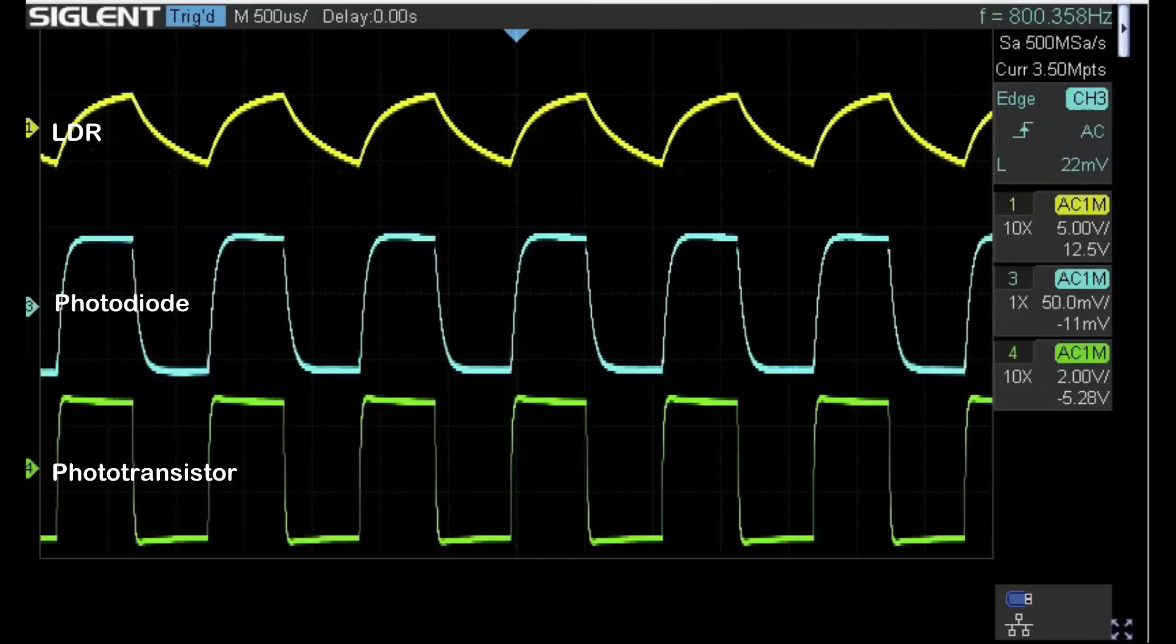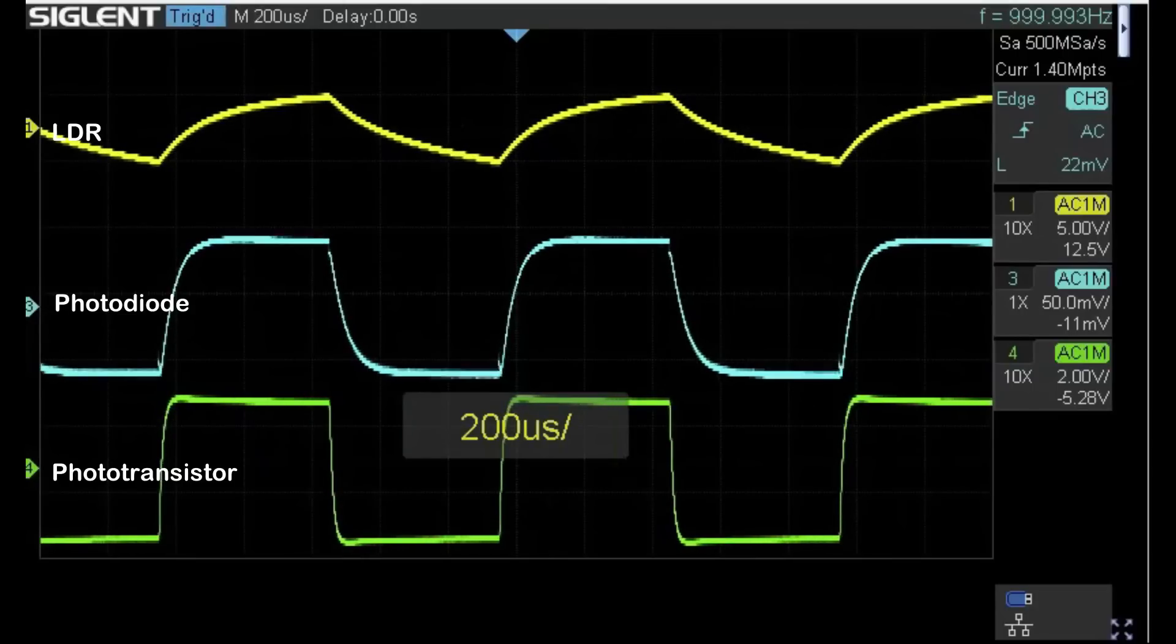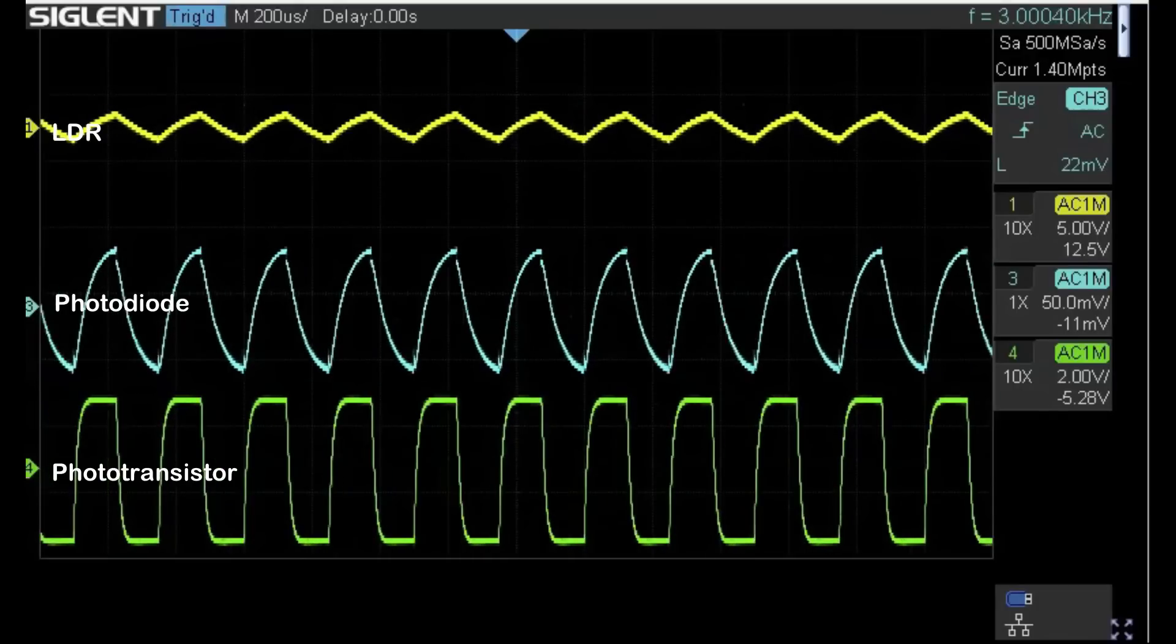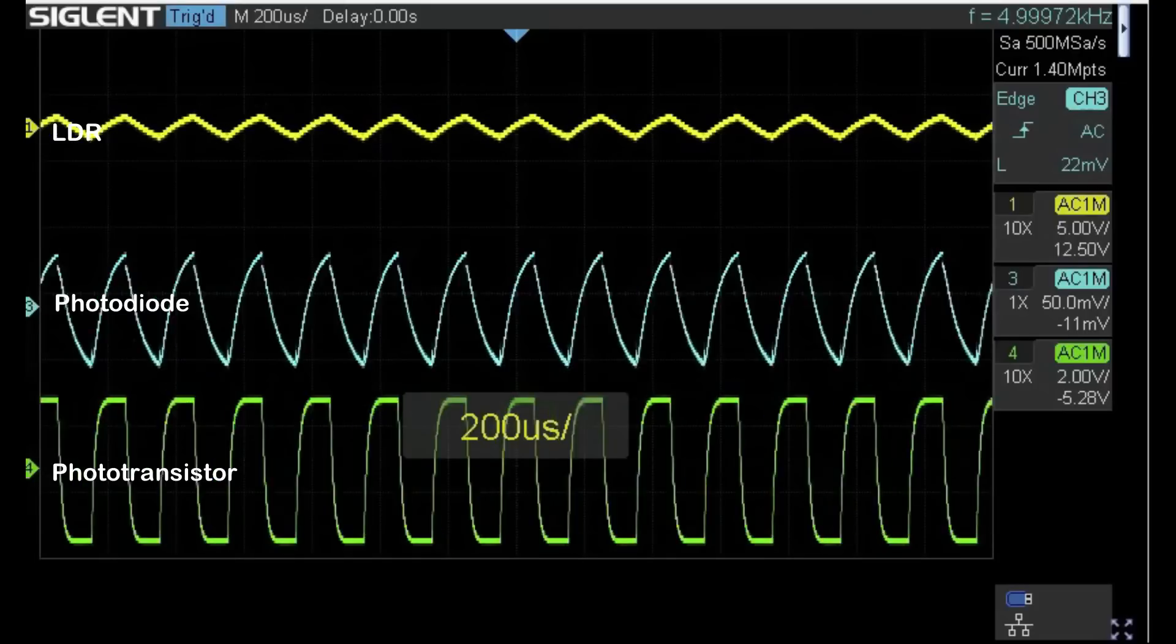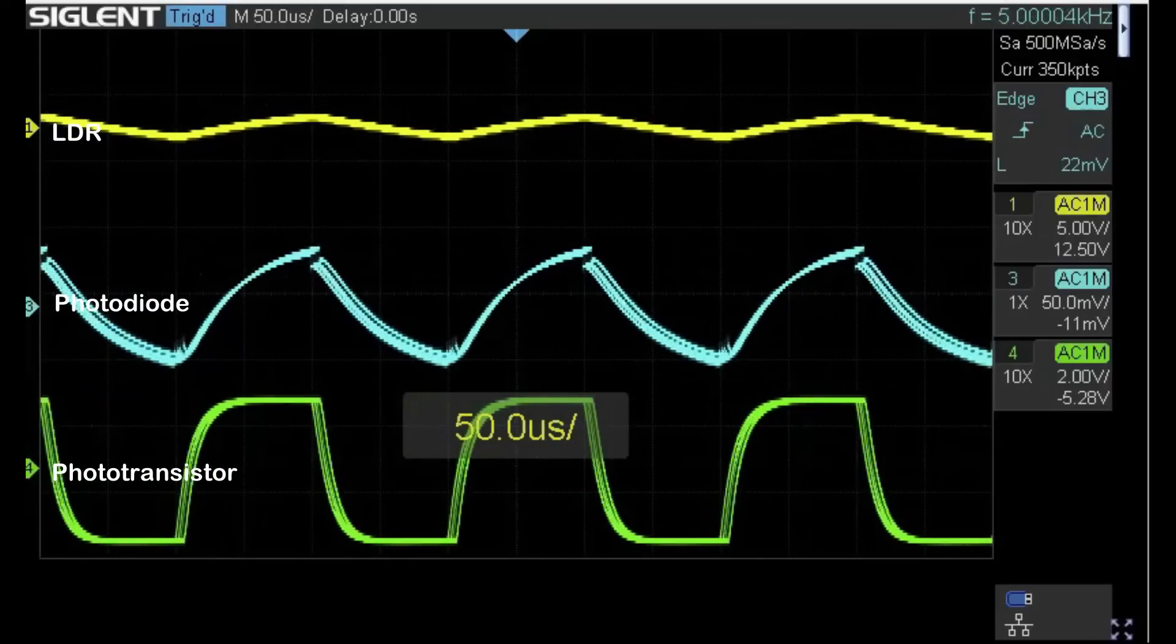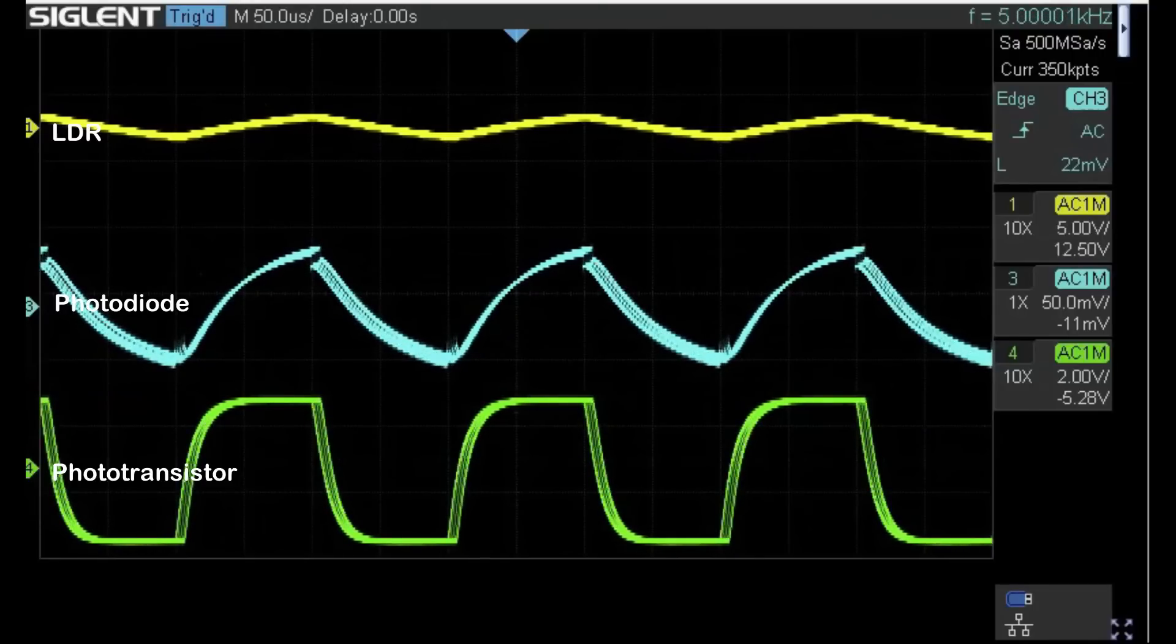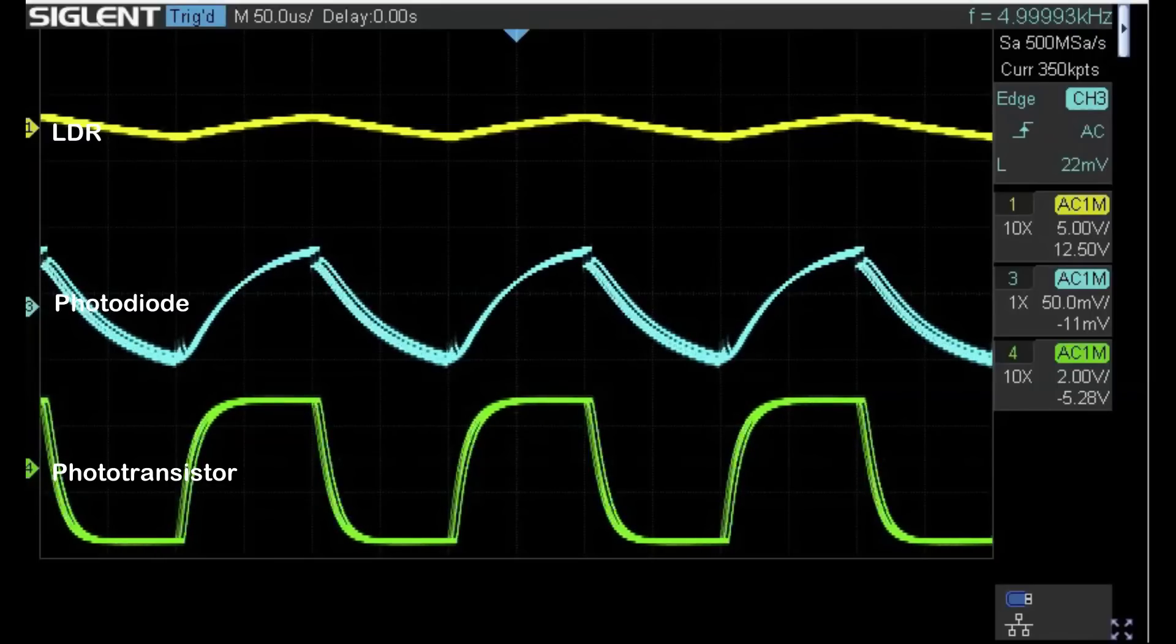That's one kilohertz, not a great deal of difference there. I'm going to go up in one kilohertz steps now. That's five kilohertz, and if we open up the time base you can see the LDR simply doesn't have time to respond and the waveform has reduced in amplitude quite considerably. The photodiode is still just about hacking it, but the phototransistor is still in front with a reasonably good square wave.